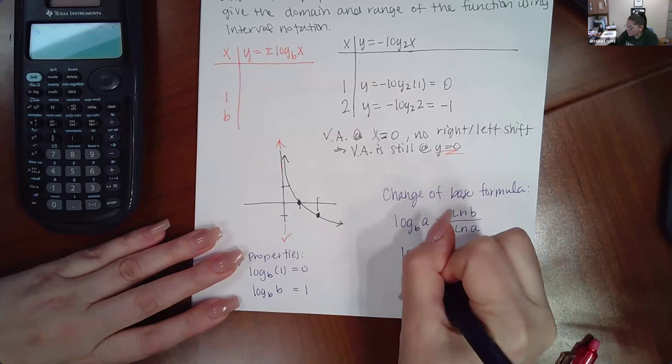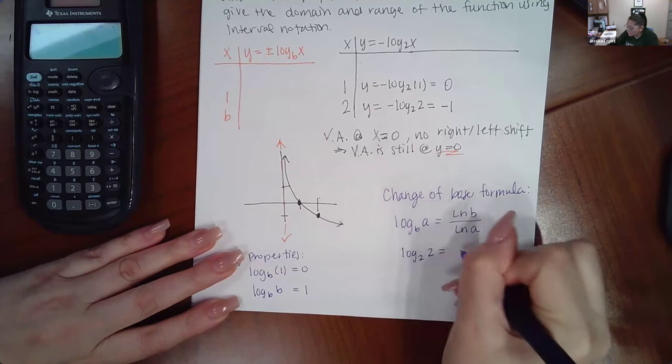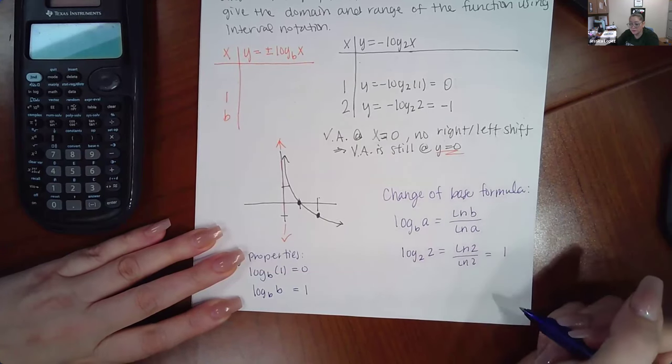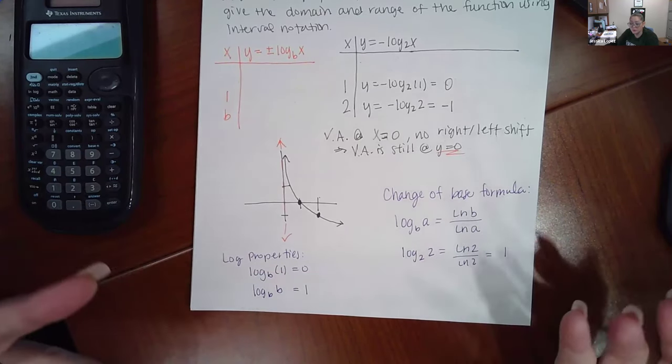So for instance, if I wanted to type in log two of two, I would type ln of two over ln of two, which happens to equal one. Same thing over itself will equal one.